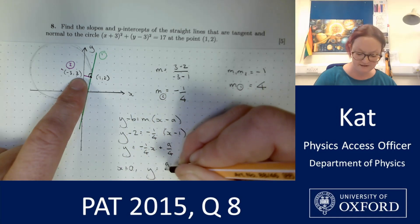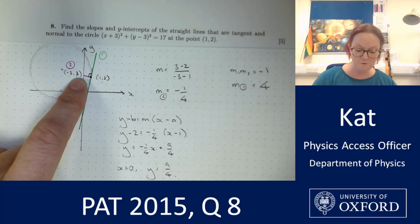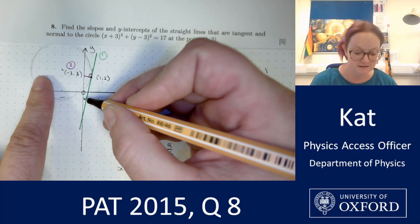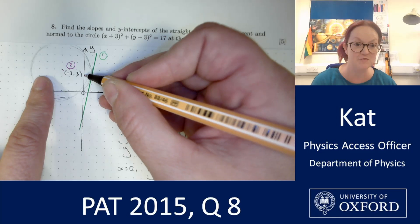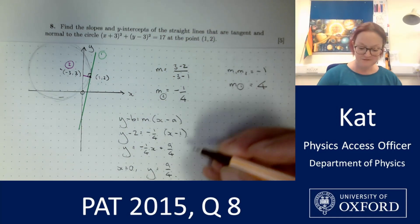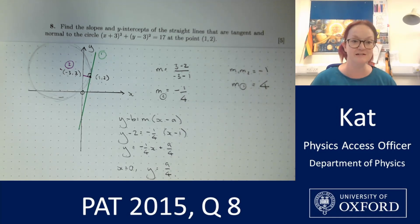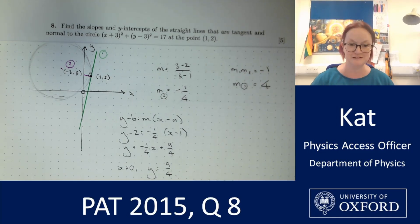Means that the intercept when x is equal to 0 is going to occur at x = 0, y = 9/4. A little bit of sense checking. That's positive just a bit over 2. Perfect. So I've got the intercept and the gradient of that first line sorted out.